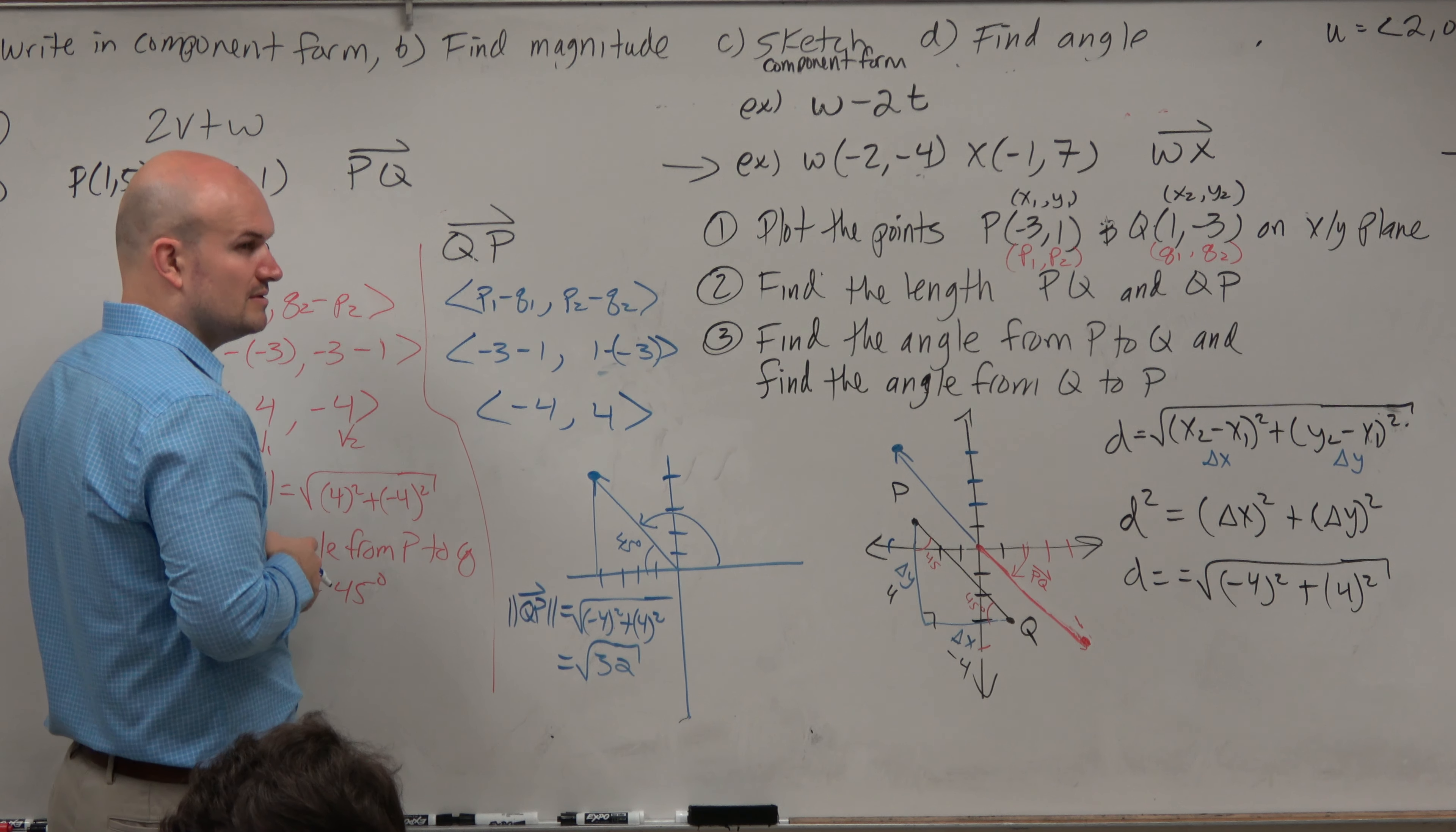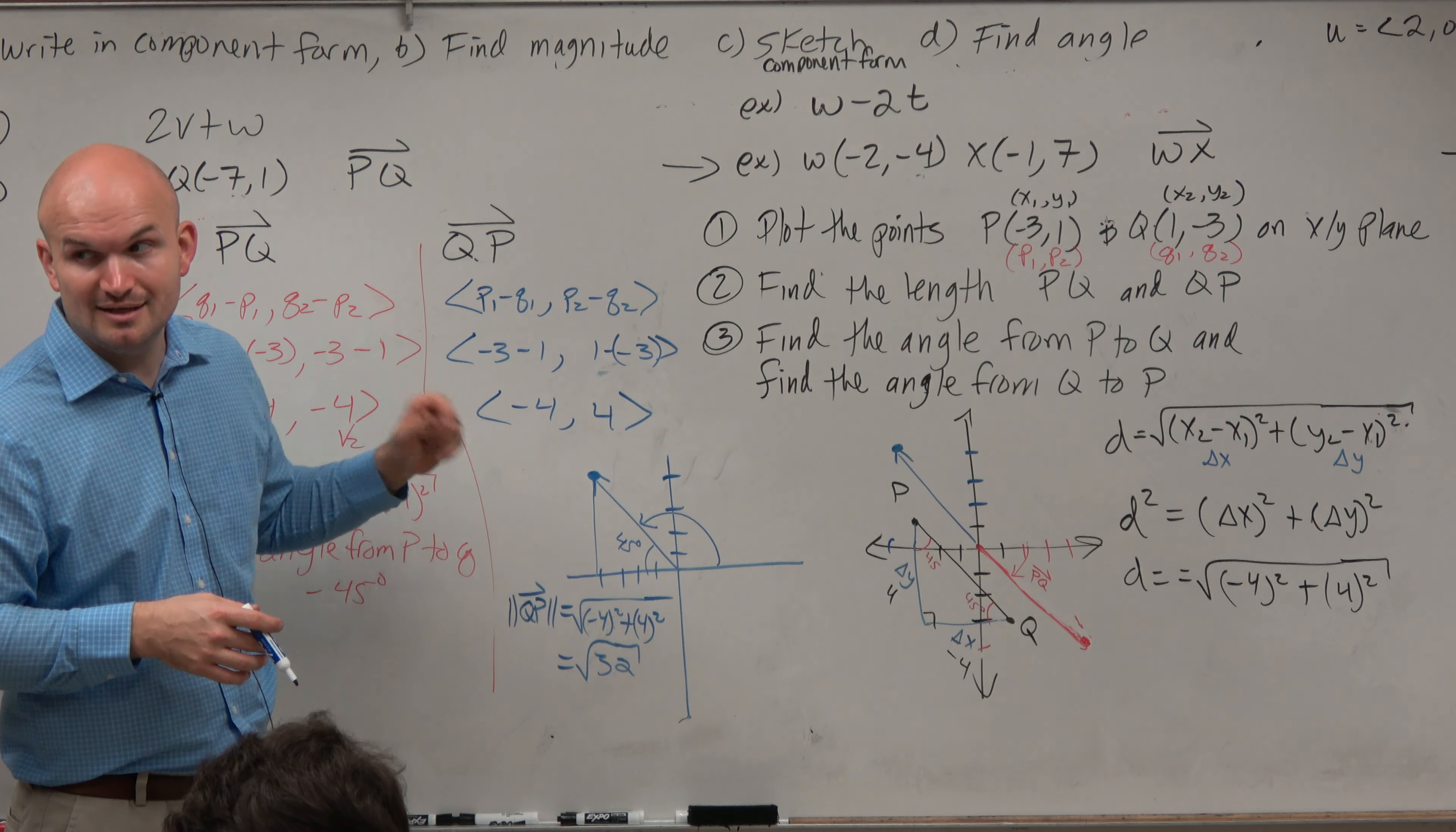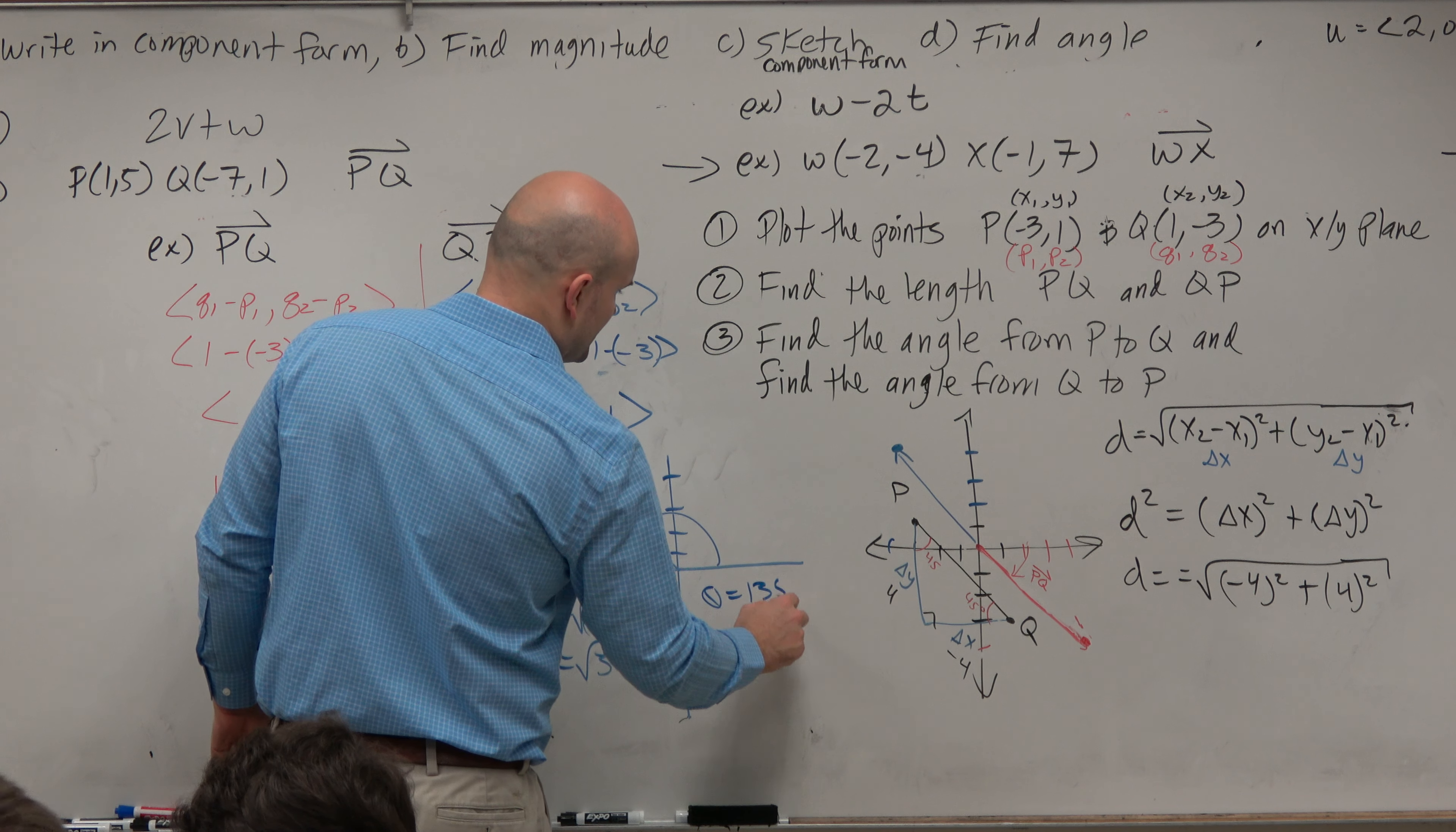So what is that angle? Does anybody know? Angle of the vector. Well, from here to here is 45 degrees. From there to there is 180. 135. 135. Theta equals 135 degrees.